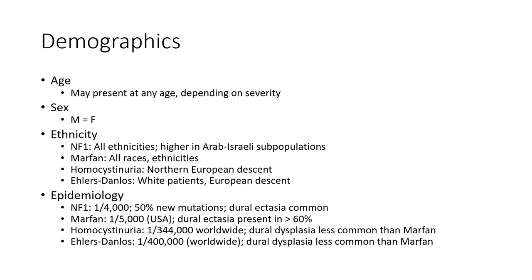Homocystinuria — 1 in 344,000 to 400,000 worldwide. Dural dysplasia is less common than in Marfan syndrome.